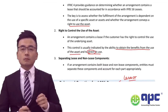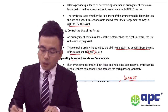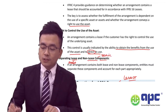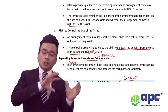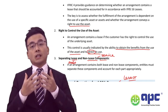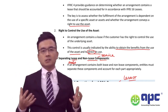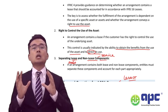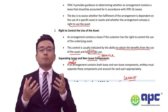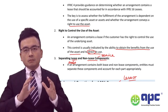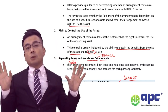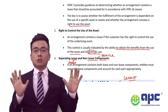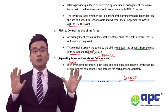Here's the bonus point. Within a contract there might be a lease component — related to the asset itself — or a non-lease component — related to the service itself. The accounting treatment depends on the entity's accounting policy. The entity can account for the lease and non-lease components together by combining them into the right-of-use asset and lease liability value. Alternatively, the entity can separate them out: recognising the right-of-use asset and lease liability for the lease component, but expensing the non-lease component — such as maintenance services.